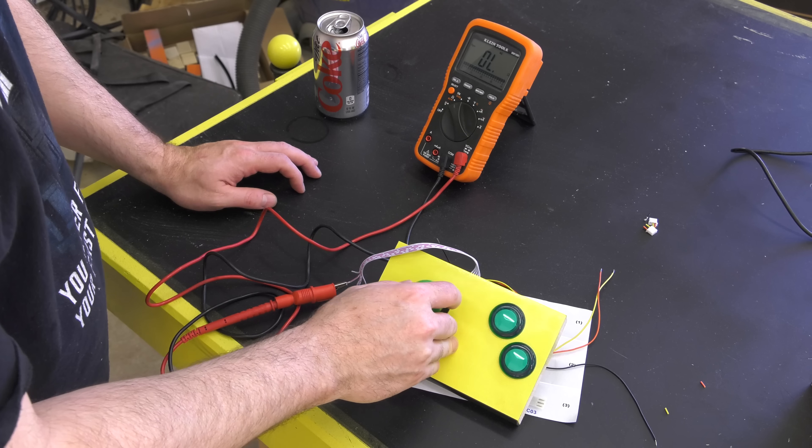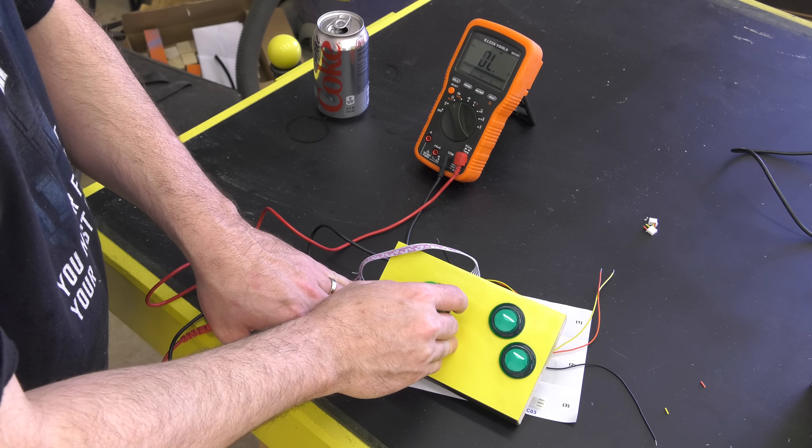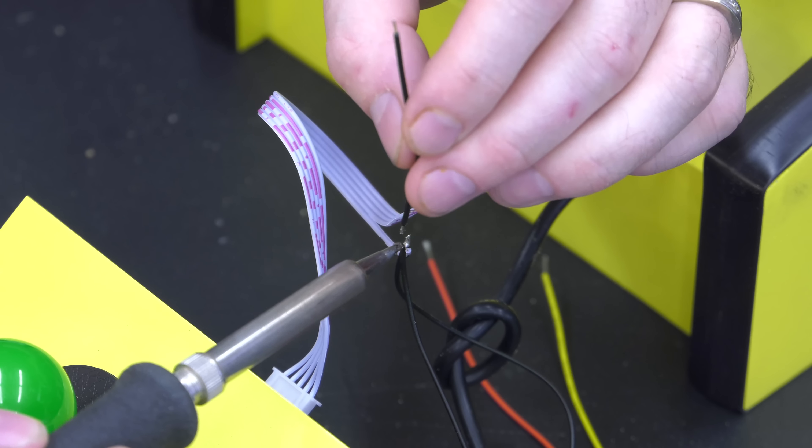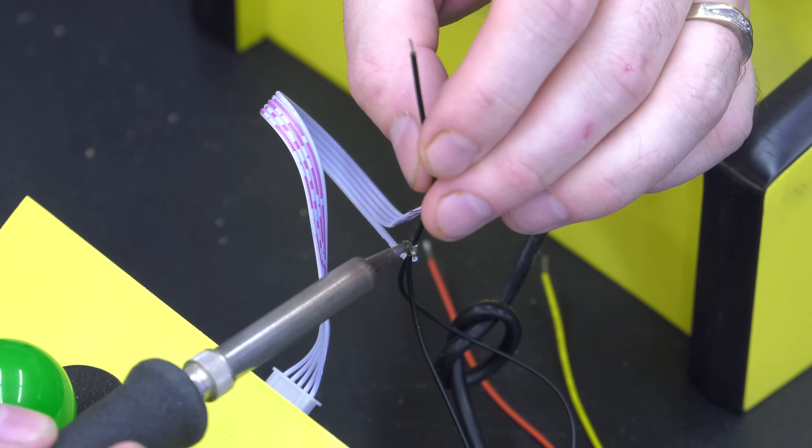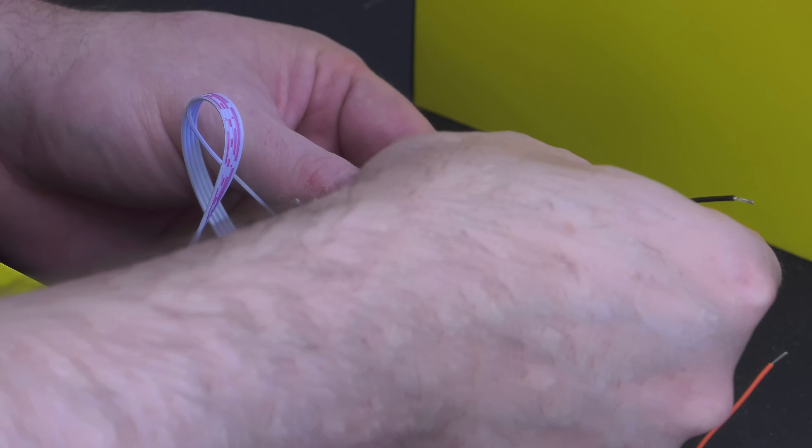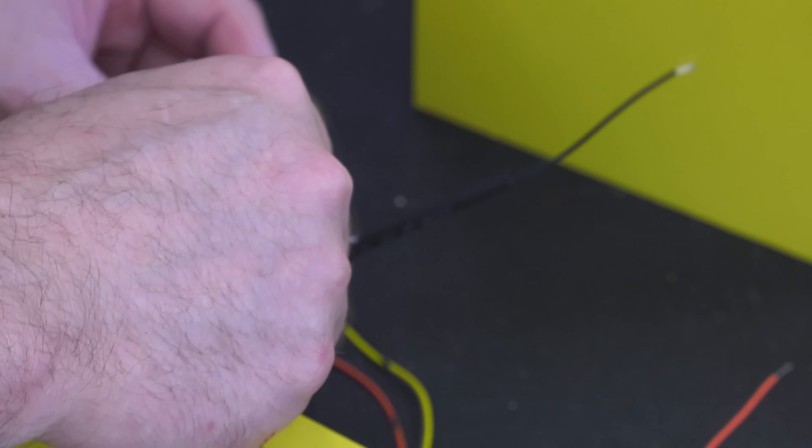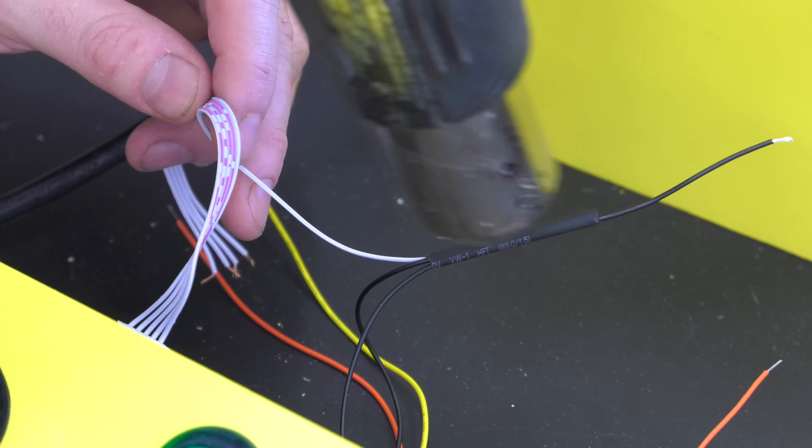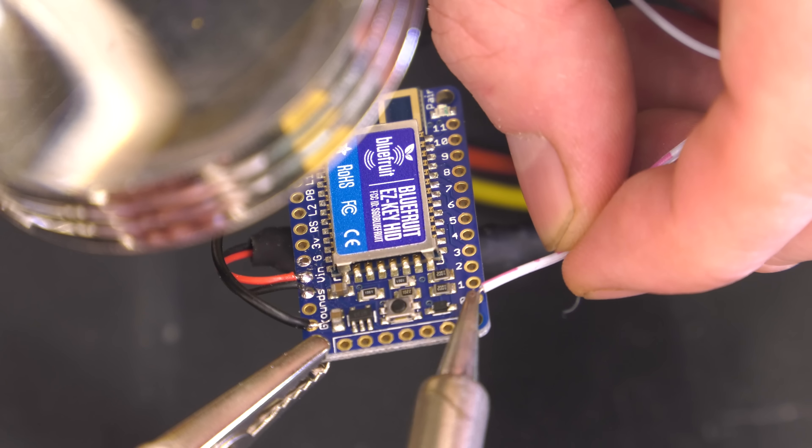The wires on the joysticks are not labeled, so I used the continuity mode of my multimeter to determine which wires were up, down, left, and right. I soldered the grounds from the joystick and the two buttons together and then once again used a section of heat shrink tubing to cover them up. I then soldered the joystick and all of the buttons to the Adafruit's keyboard contacts.